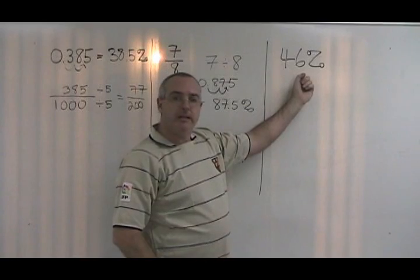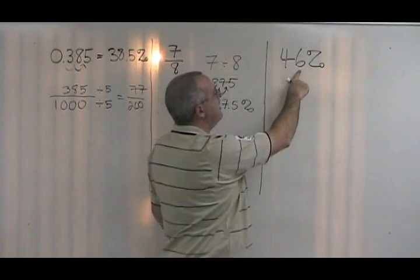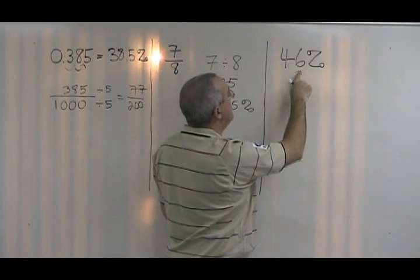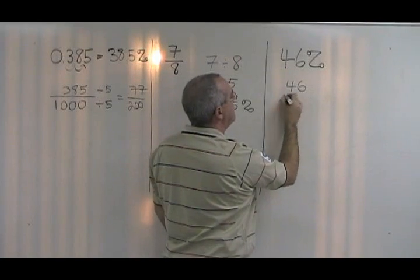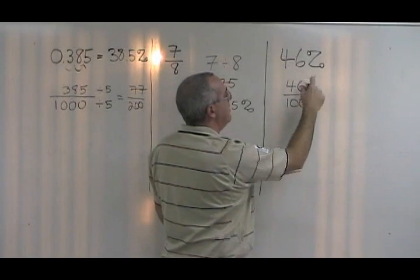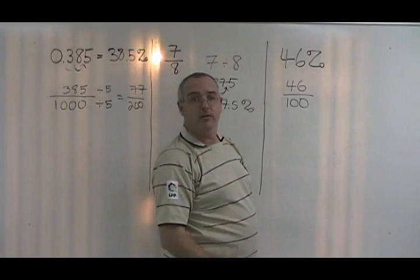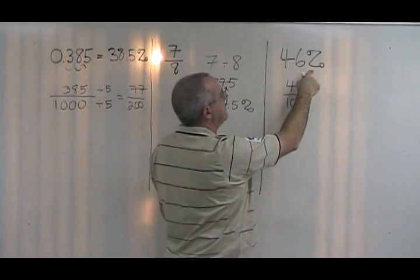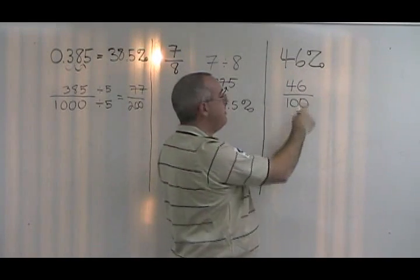When we start with a percent, we can convert it to a fraction very rapidly by saying 46% must be equal to 46 over 100. The word percent means over 100. So any number with a percent, you can put the number on the top and 100 on the bottom.